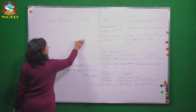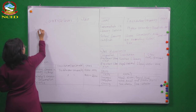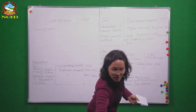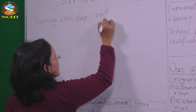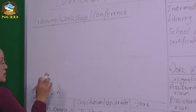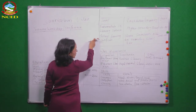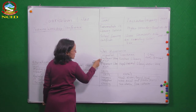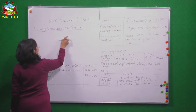After skills comes training, workshops, and conferences — related ones. To summarize the CV structure so far: personal details, education (master's, bachelor's, intermediate, SLC), work experience (as assistant librarian), and skills. Now we move to training and workshops.